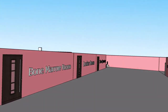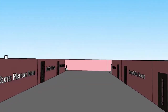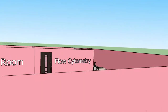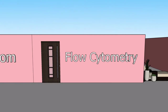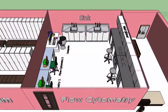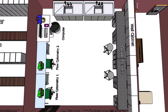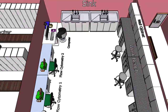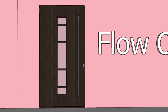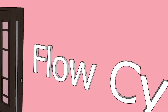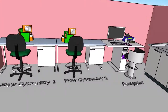Next we move to the flow cytometry section. Flow cytometry is a method used to detect, identify, and count specific cells, and it can identify particular components within cells. Examples of tests done by flow cytometry include reticulocyte count, CD4 count, HLA testing, platelet function test, immunophenotyping, and PNH investigation.